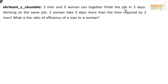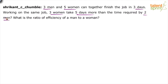Three men and five women can together finish a job in three days. Working on the same job, three women take five days more than the time required by two men. Based on this data, we have to find out the ratio of the efficiency of a man to a woman.